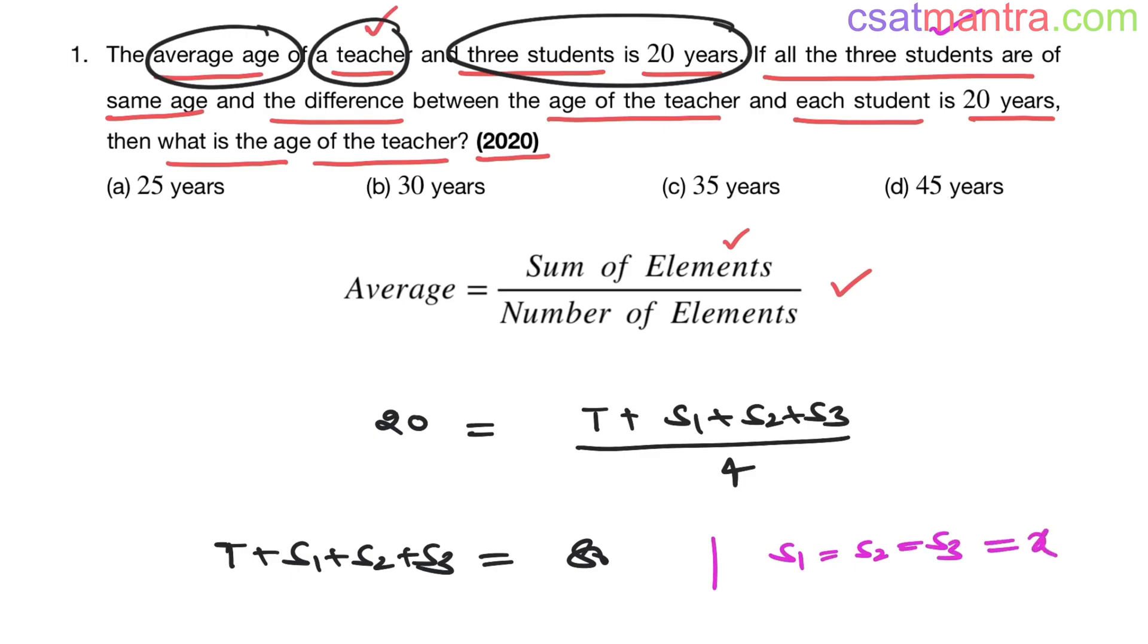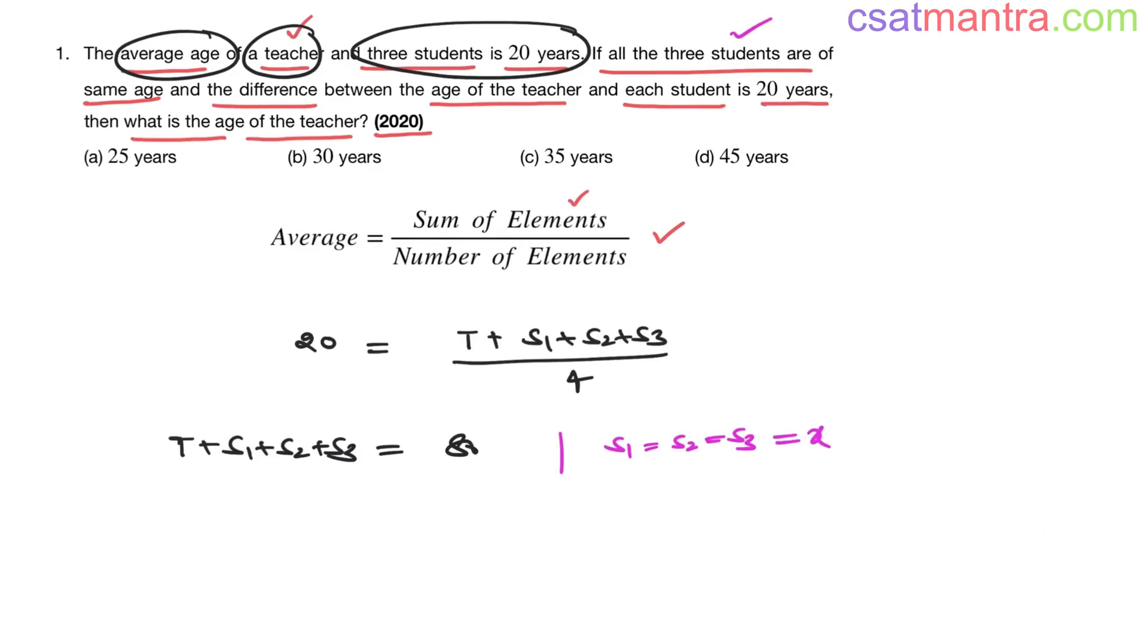Further it is mentioned that difference between the age of the teacher and each student is 20 years. T minus age of each student, that is x, equals 20. So from this we have T is equal to x plus 20.